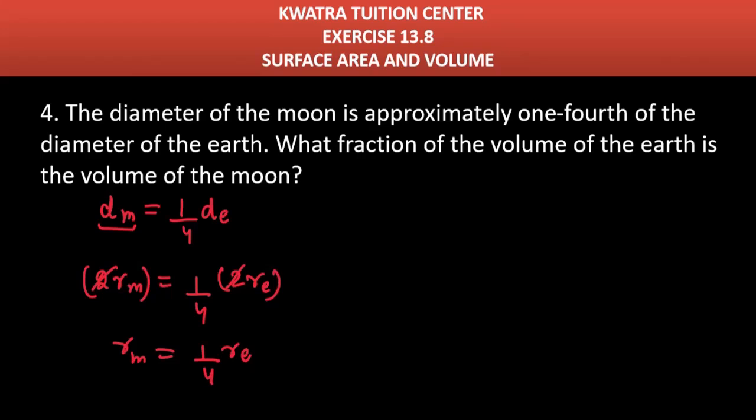Now, here we have to write volume of earth and volume of moon. The volume of earth is the first to write. So, it will be equal to four by three pi RE cube.